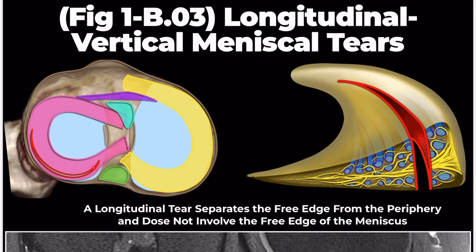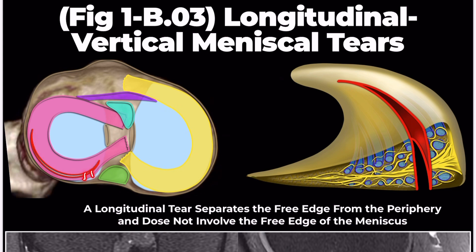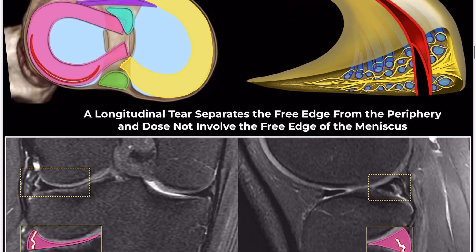Longitudinal tears run perpendicular to the tibial plateau and parallel to the long axis of the meniscus. They trace the meniscus's contour, keeping a consistent distance from its periphery, and split it into central and peripheral sections.